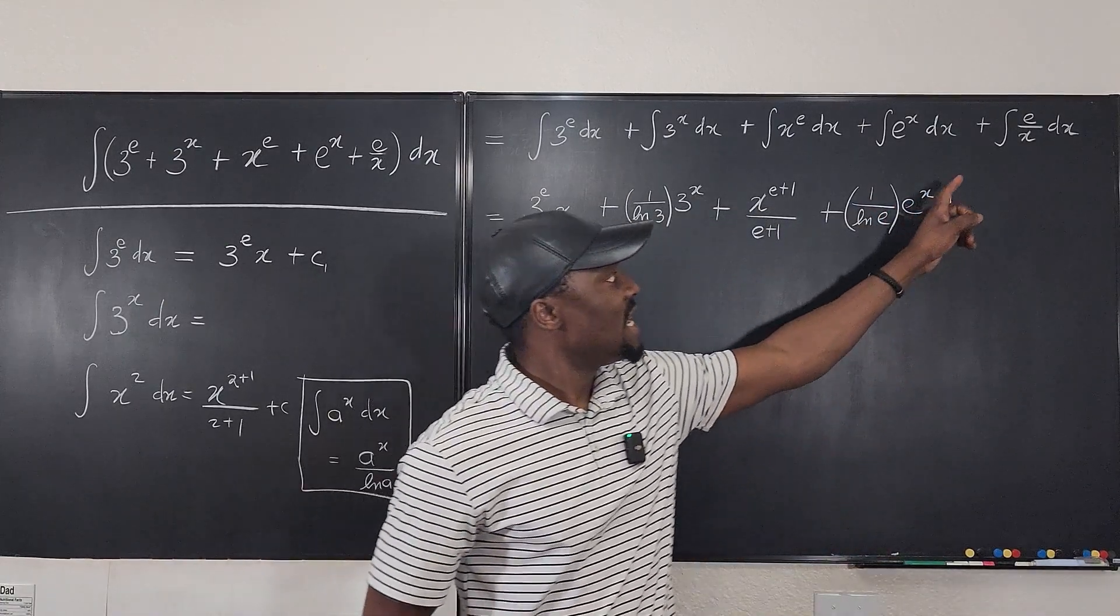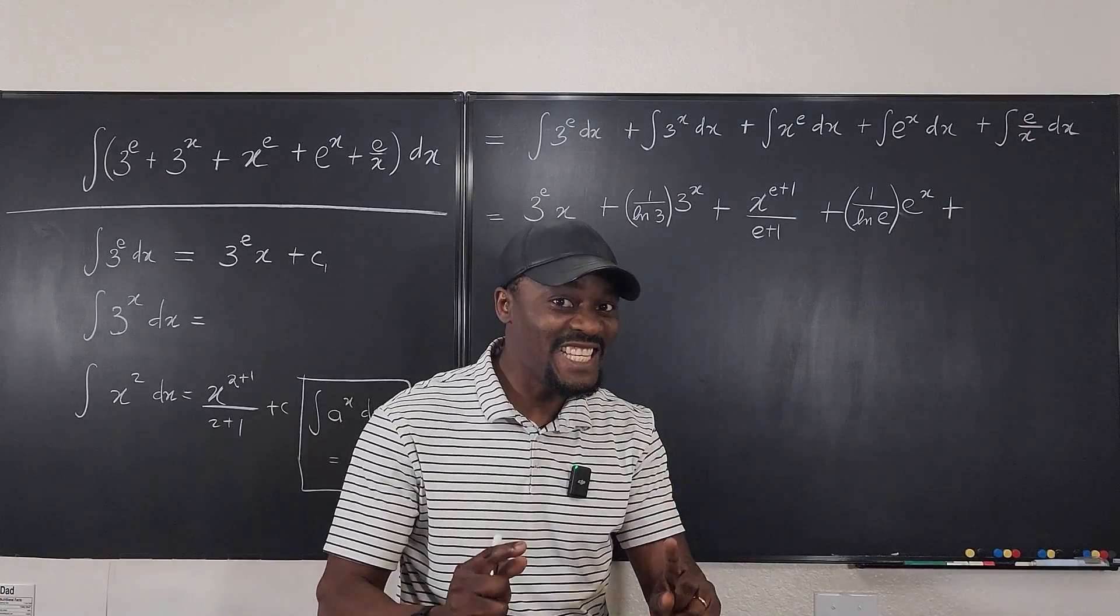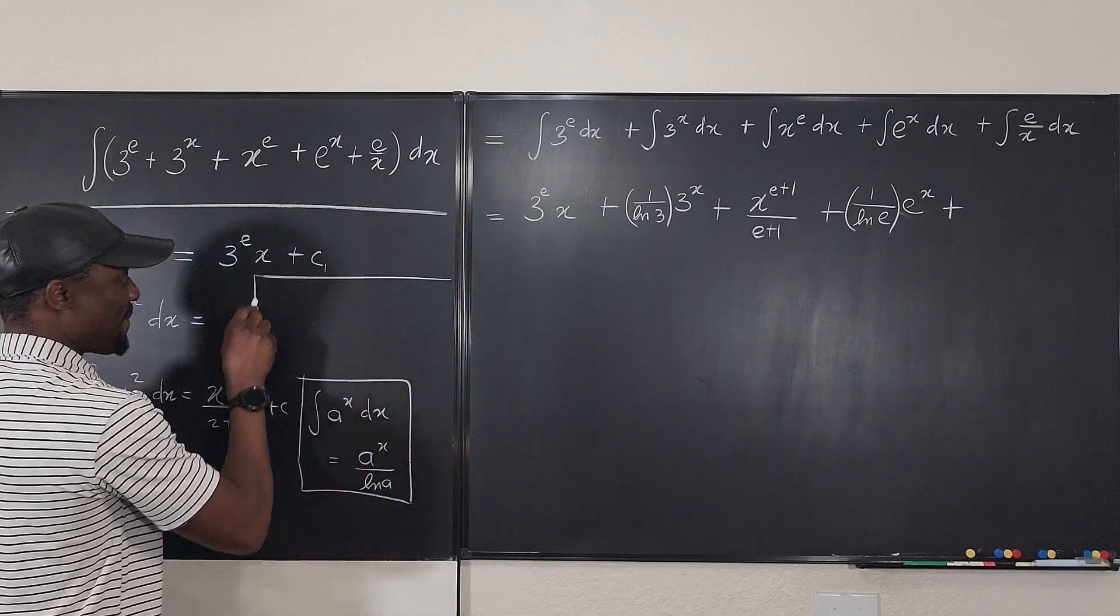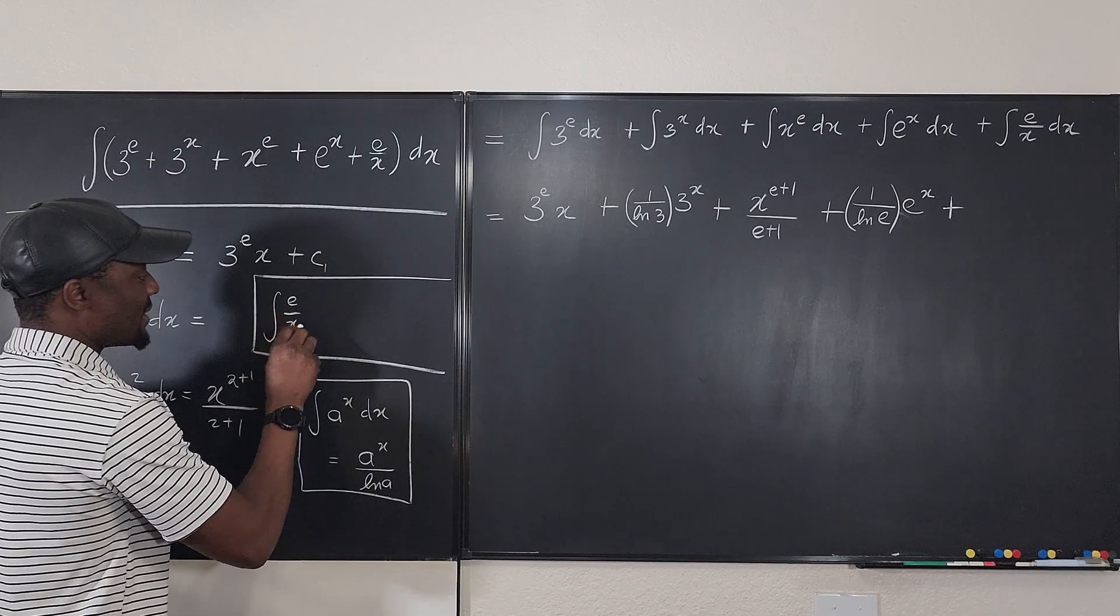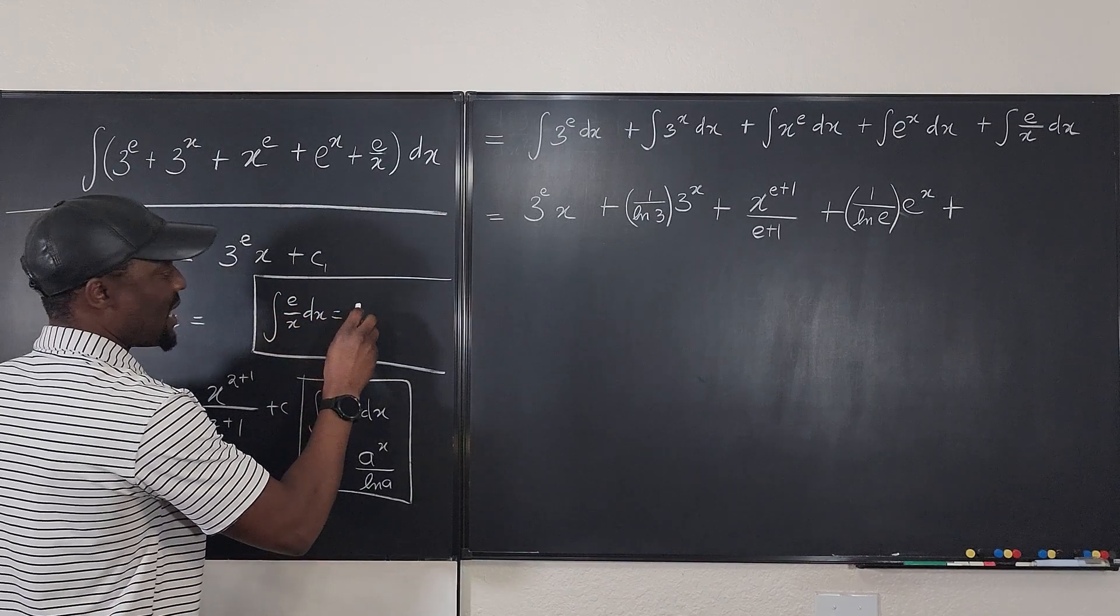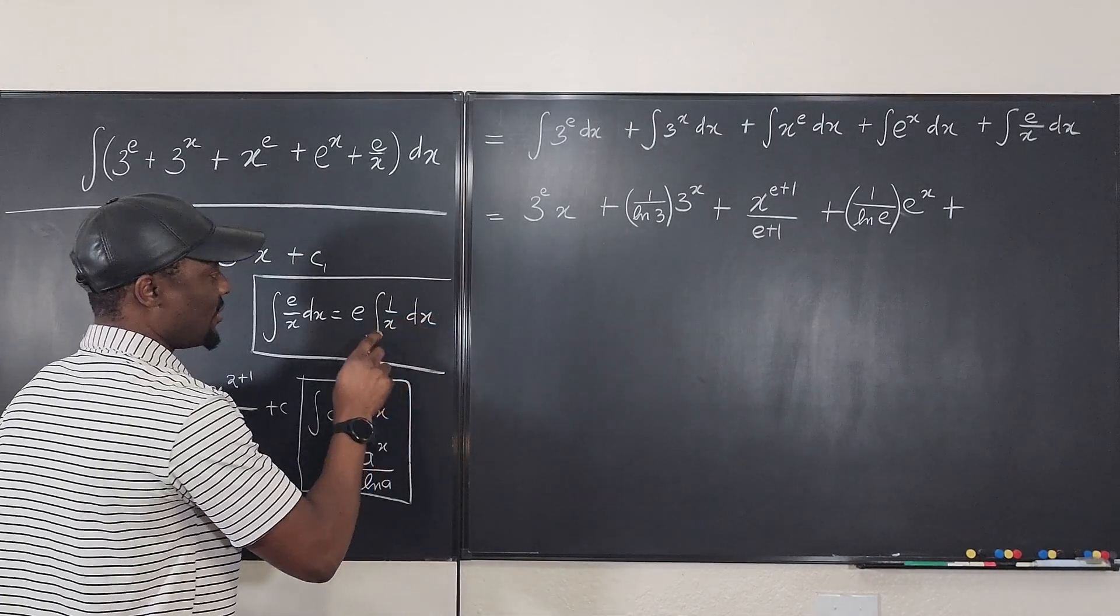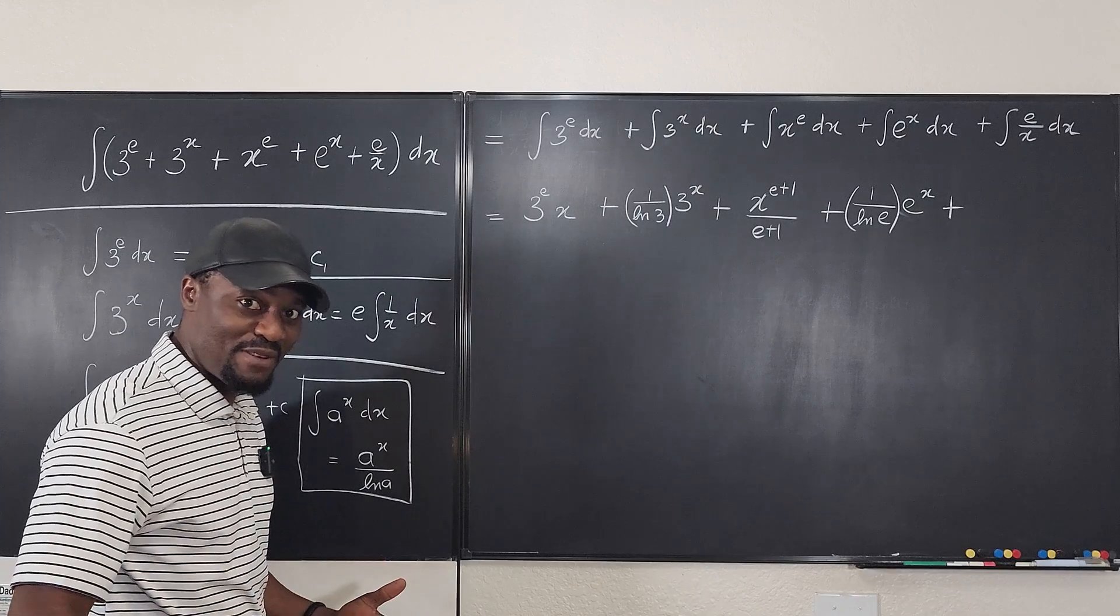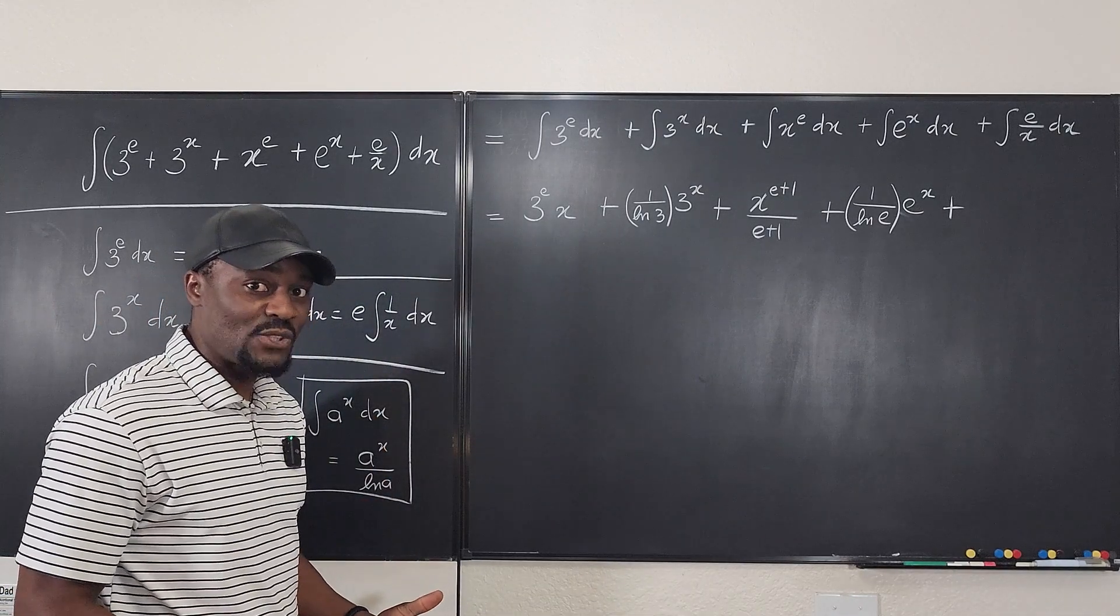This is going to be e over x dx. Remember again, e is a number. So let's do the final one somewhere here. So the integral of e over x dx can be written as e times the integral of 1 over x dx. You see? This and this are the same because e is a number, not a variable. So what is the integral of 1 over x? It's natural log of x.